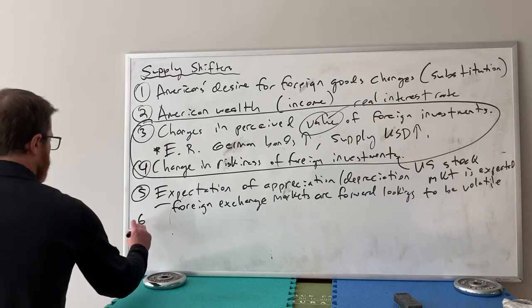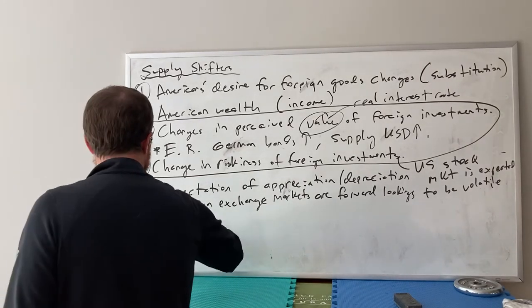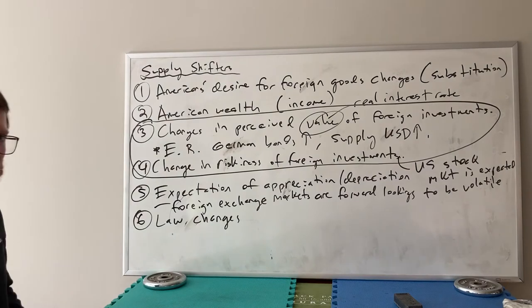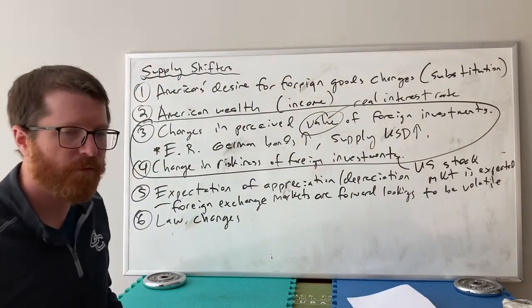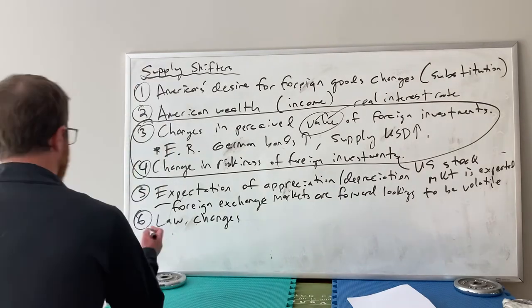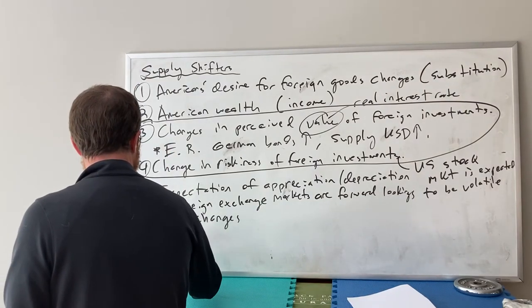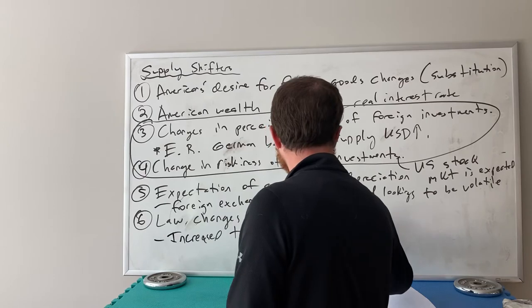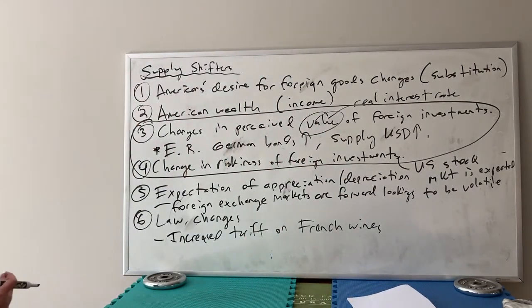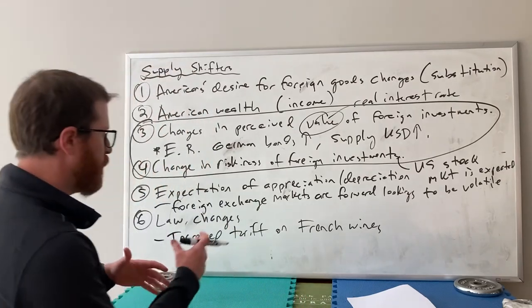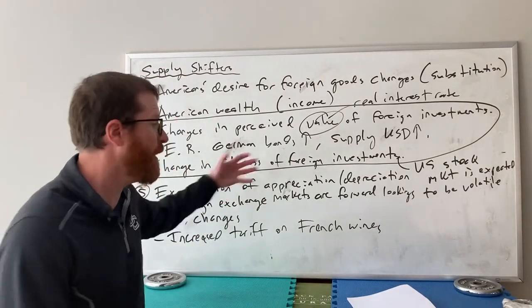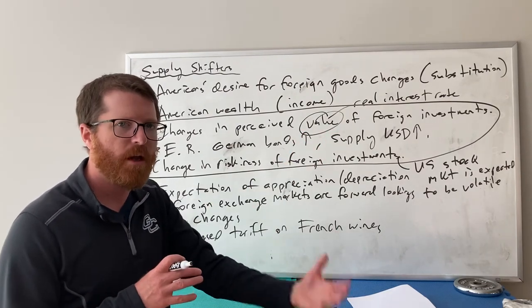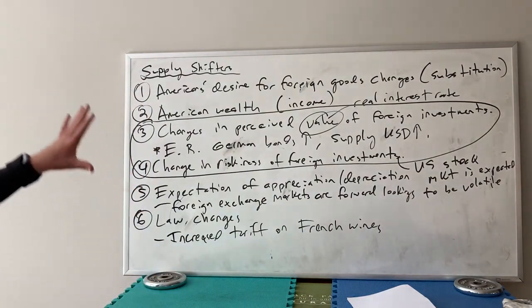A sixth factor, also highly relevant, is changes in law — specifically immigration laws or trading laws like tariffs. For example, if we impose an increased tariff on French wines, that would reduce the amount of money leaving the US. To buy French wine you need to exchange US dollars, but if the tariff drives up the price and reduces purchases, the supply of US dollars exiting the market goes down.